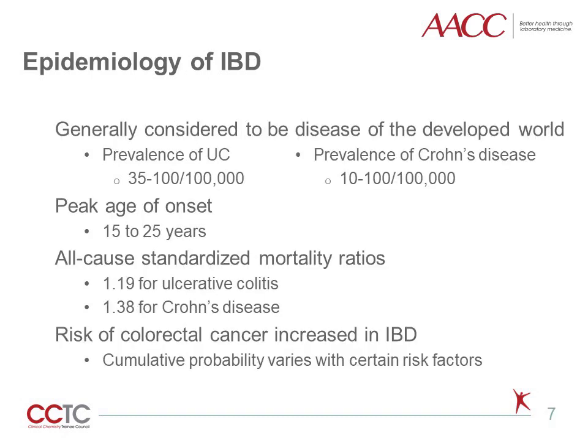Overall, IBD is considered a disease of the developed world. The prevalences for ulcerative colitis and Crohn's disease shown on this slide are estimates based on studies in North America and Western Europe. The peak age of onset for IBD tends to be between 15 and 25 years of age, with not much difference between males and females. Both diseases appear to have increased standardized mortality ratios compared to the general population, which is slightly more apparent for Crohn's disease. This may be attributed, at least in part, to an increased risk of colorectal cancer, which increases as the time from diagnosis progresses.